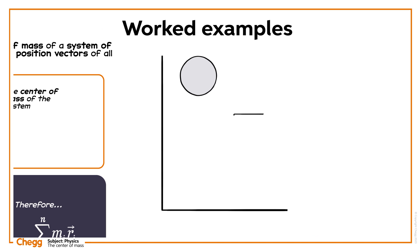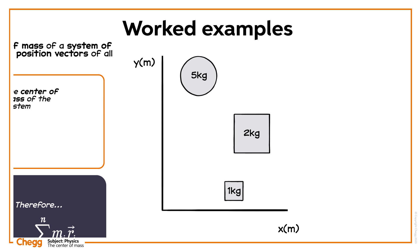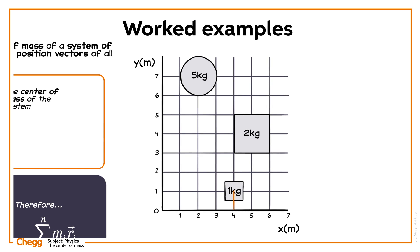Consider three objects of uniform mass density with masses 1 kg, 2 kg, and 5 kg, placed in an xy plane at locations (4 m, 1 m), (5 m, 4 m), and (2 m, 7 m) respectively. Now find the centre of mass of the system.